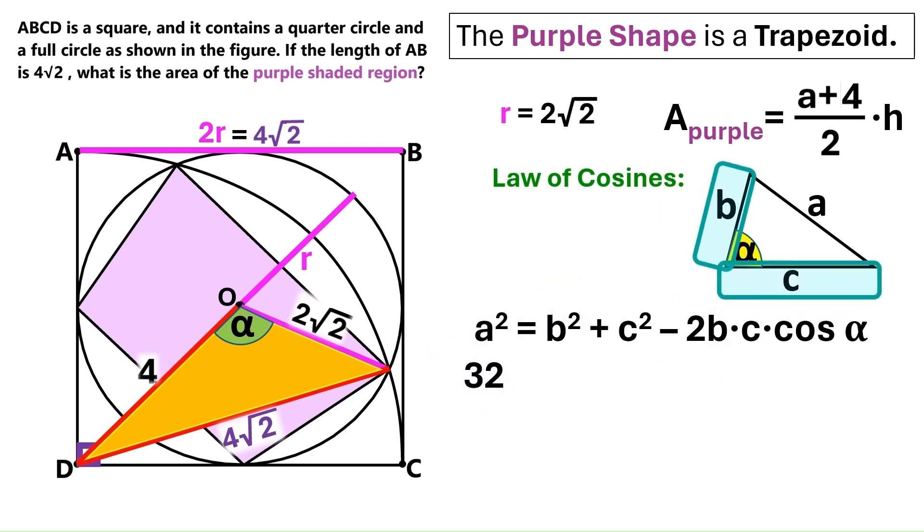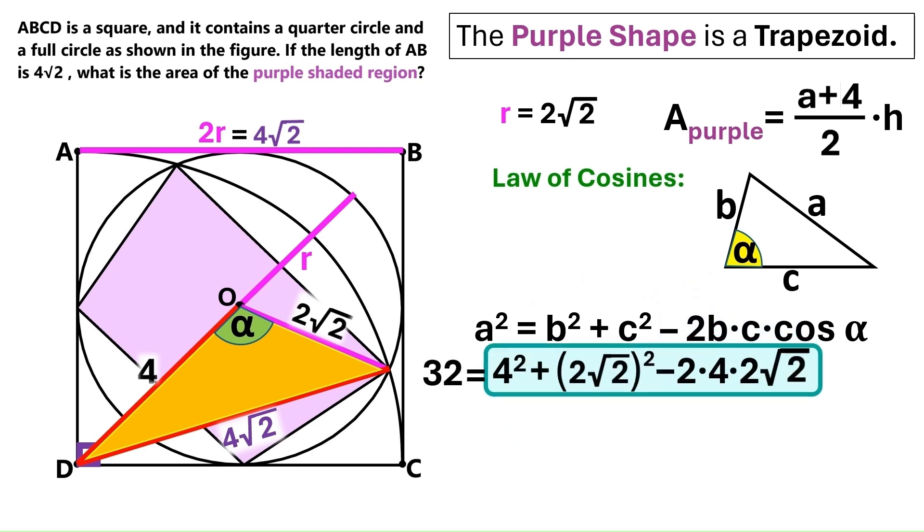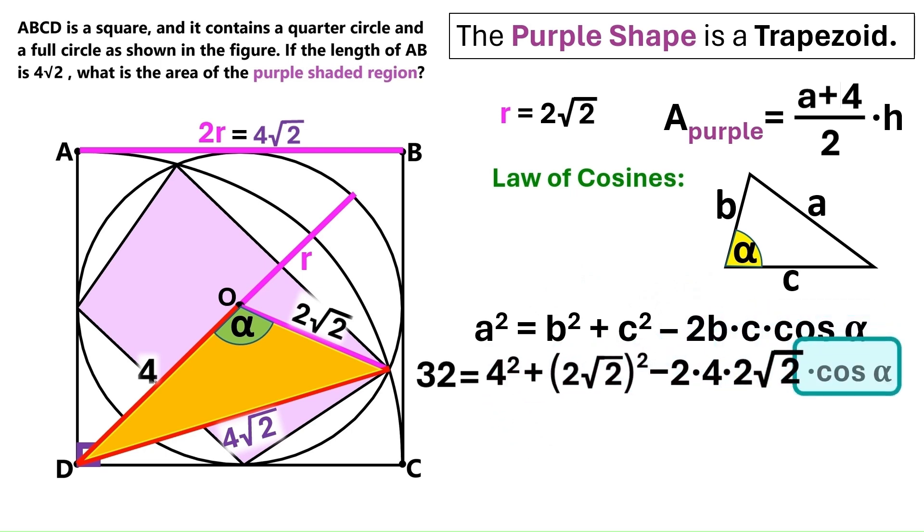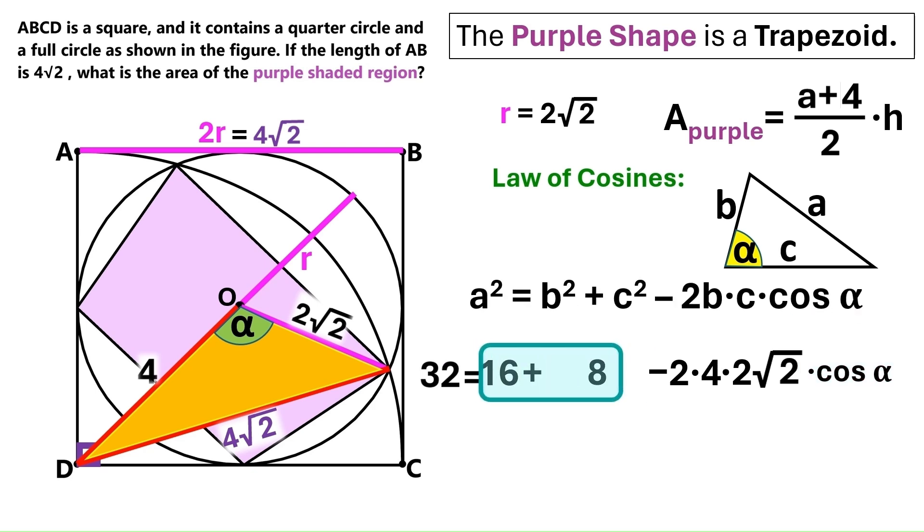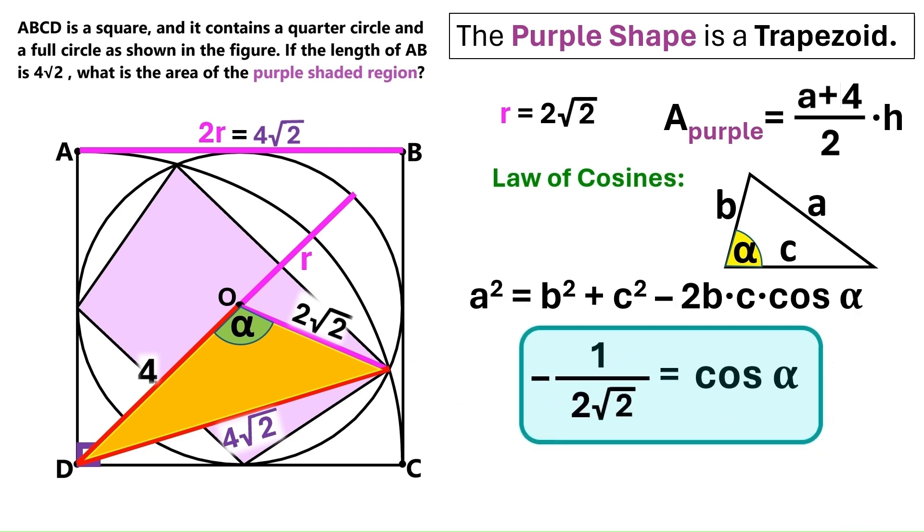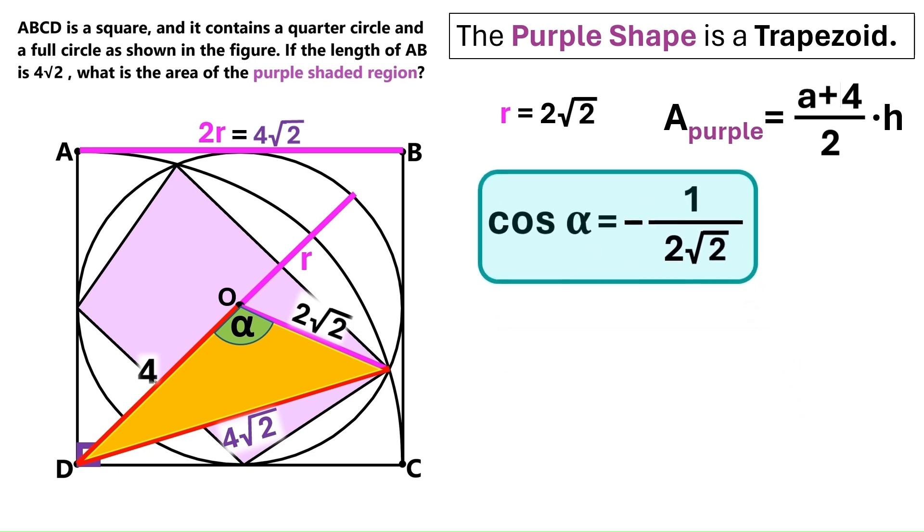And B and C are the sides adjacent to the angle alpha. So in our triangle, A and B are these two sides, which measure 4 and 2 times root 2. So let's replace all the B's and C's with those values. And cosine alpha stays as cosine alpha because it's what we're trying to find. Let me do the math for you. And cosine alpha turns out to be minus 1 over 2 times root 2.